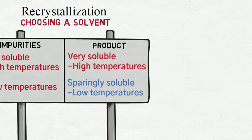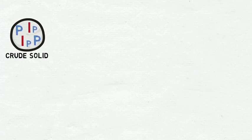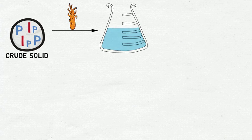Let me explain how this works. You have your crude solid which is made up of product P and impurities I. You add the solvent at its boiling temperature until the solid is just dissolved. Recrystallization relies on the fact that as temperature increases, solubility of the solid usually increases.